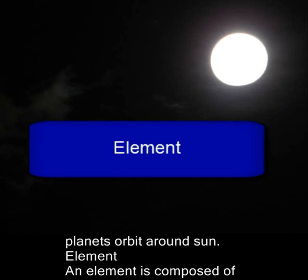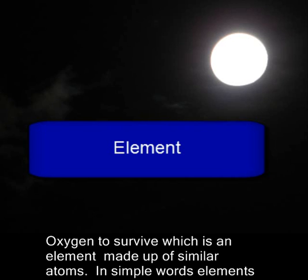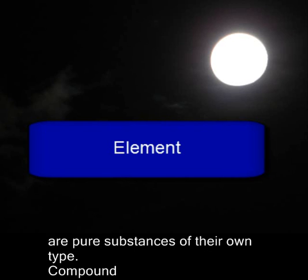Element. An element is composed of similar atoms or molecules of similar atoms. Examples are carbon, iron, hydrogen, and others. Human cells need oxygen to survive, which is an element made up of similar atoms. In simple words, elements are pure substances of their own type.